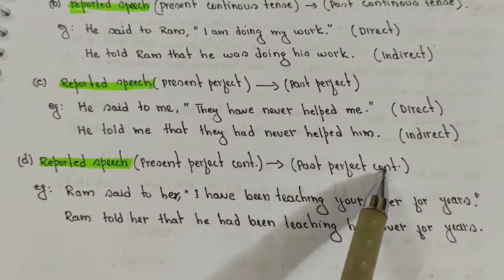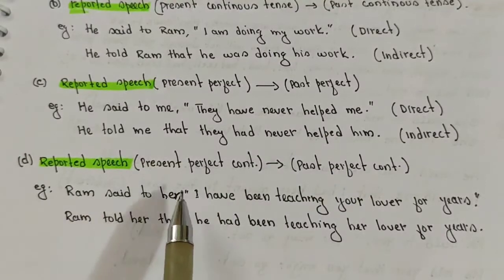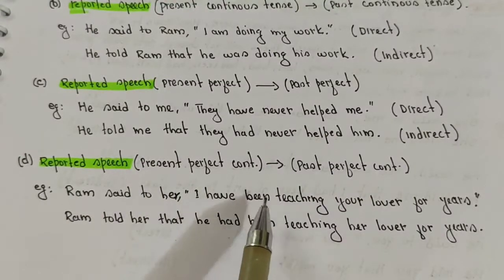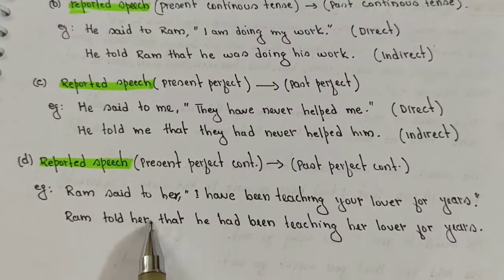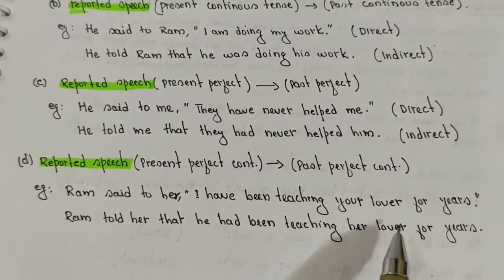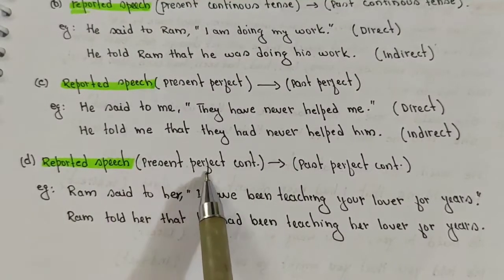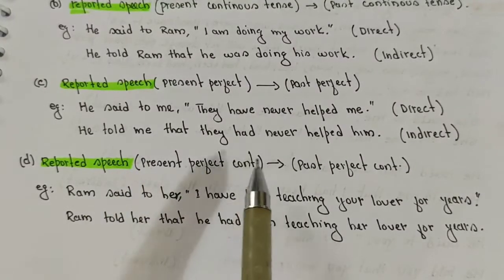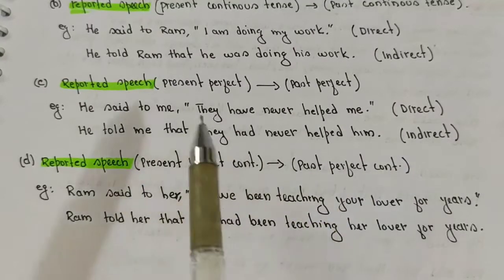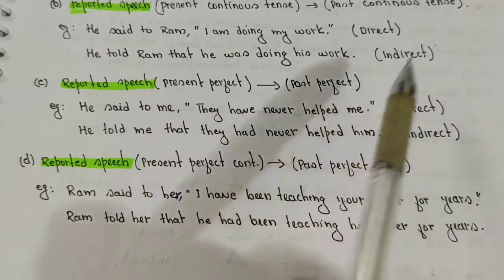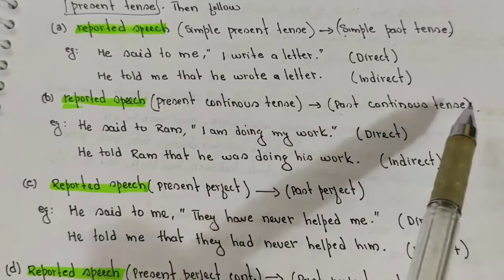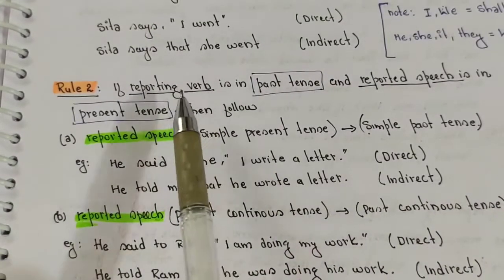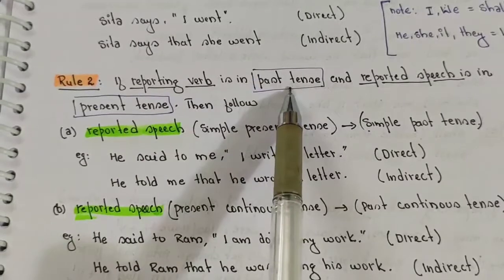If your reported speech is in present perfect continuous, then it will get changed into past perfect continuous. Example: 'Ram said to her, I have been teaching your lover for years.' It becomes: 'Ram told her that he had been teaching her lover for years.' Summary: present perfect continuous → past perfect continuous; present perfect → past perfect; present continuous → past continuous.